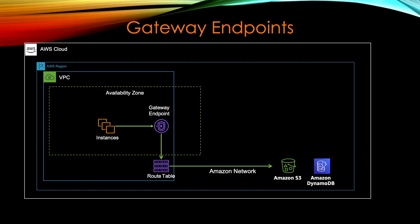Now let's go to the console for the demo to show how you can create an endpoint and use it. What I will do is create an EC2 instance in a private subnet that won't have any connectivity to the internet and won't be able to list my S3 buckets. Then we'll create a gateway endpoint, I'll show you that the route table is updated, and once updated, the EC2 instance will be able to access S3.